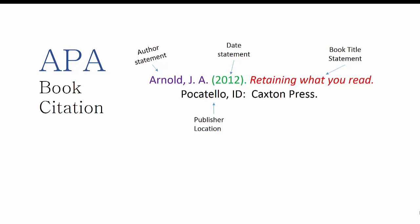After the title, put the city and state of the publisher, followed by a colon, a space, and the name of the publishing company. If the publisher has common abbreviations in their name, such as CO for company, INC for incorporated, or PUB for publisher — and there are many others — you may use the abbreviated form. Each section of the citation is called a statement, and each ends with a period, just like most statements in writing end with a period.